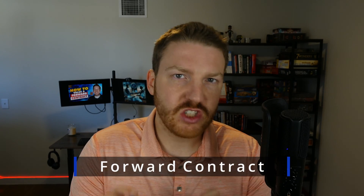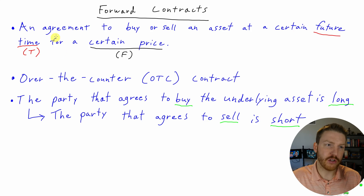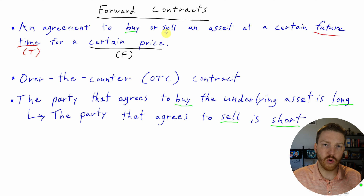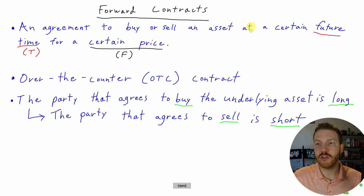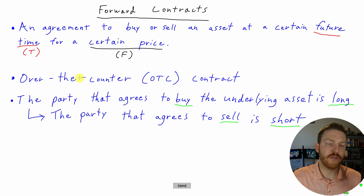Before we can get into how to price or value a forward contract, let's briefly talk about what a forward contract is. A forward contract is an agreement to buy or sell an asset at a certain future time — we'll call that T for the purposes of our calculations — for a certain price, and we'll call that F.